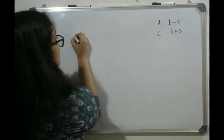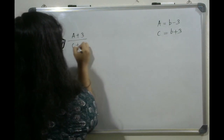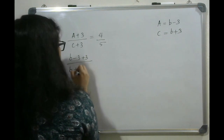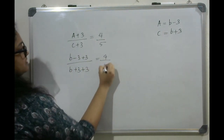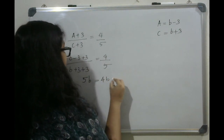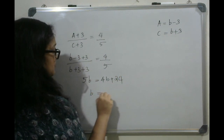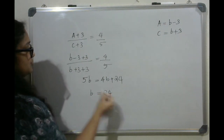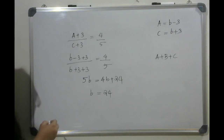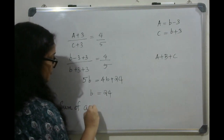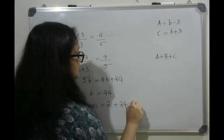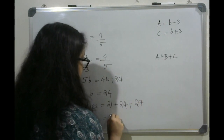3 years hence, the respective ratio between the ages of A and C will be 4 is to 5. That equals A plus 3 by C plus 3 equals 4 by 5, equals B minus 3 plus 3 by B plus 3 plus 3 equals 4 is to 5. Solving, B equals 24. Therefore, the sum of ages of A, B and C equals 24 minus 3 plus 24 plus 27, that equals 72 years.